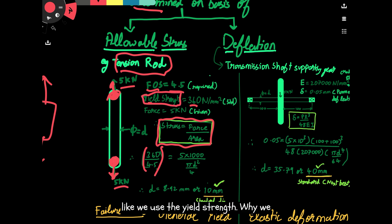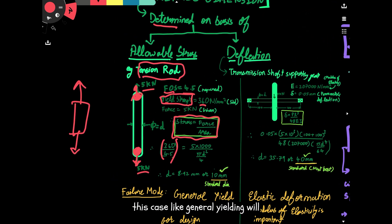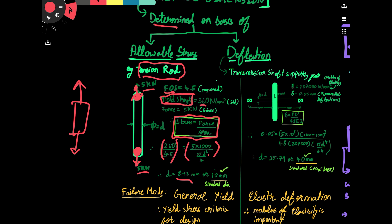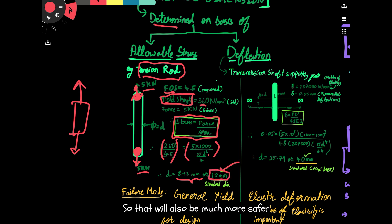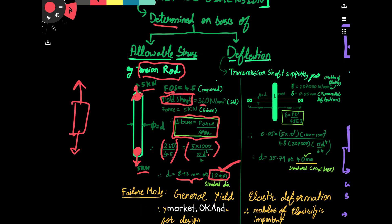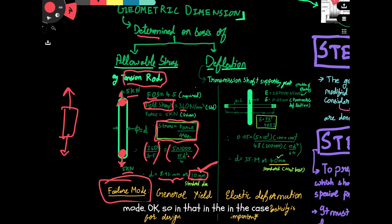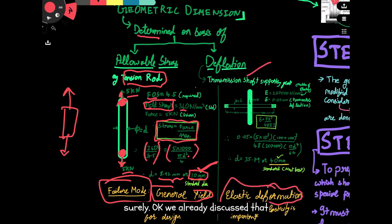We use the basic stress formula: stress = force/area. Allowable stress = 360/4.5. We use yield strength because the failure criteria in this case is general yielding — general yielding always happens in ductile material. By solving, we get a diameter of 8.92 mm, but that's not a standard diameter, so we move to the nearby standard diameter of 10 mm, which gives a safer design.